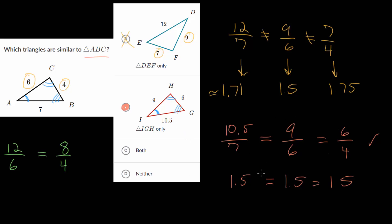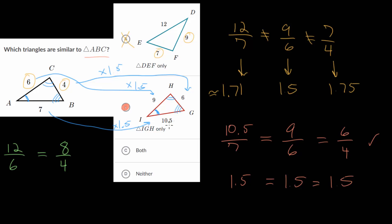Looking at these ratios is one way to approach it. Another way is to ask yourself what number you multiply by to go from the smaller triangle's side lengths to the bigger triangle. If we look at the smallest side, 4, and ask what we multiply by to get to 6, we can see we multiply by 1.5. This proportionality constant is the same for all corresponding sides: 6 times 1.5 gives 9, and 7 times 1.5 gives 10.5. So you can look at proportions or ask what you're multiplying by — or dividing by when comparing the bigger triangle to the smaller one.